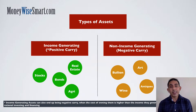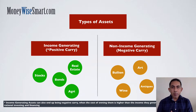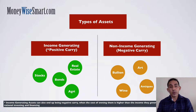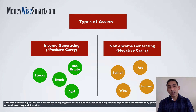Income-generating assets, on the other hand, have a positive carry built into them in the form of excess earnings over and above the opportunity cost. In simple terms, if I'm able to invest in a business which generates a 5% dividend yield instead of keeping the money in a bank earning 2% interest, or borrowing from a bank at 2% interest to invest in this business, then the investment has a positive carry.